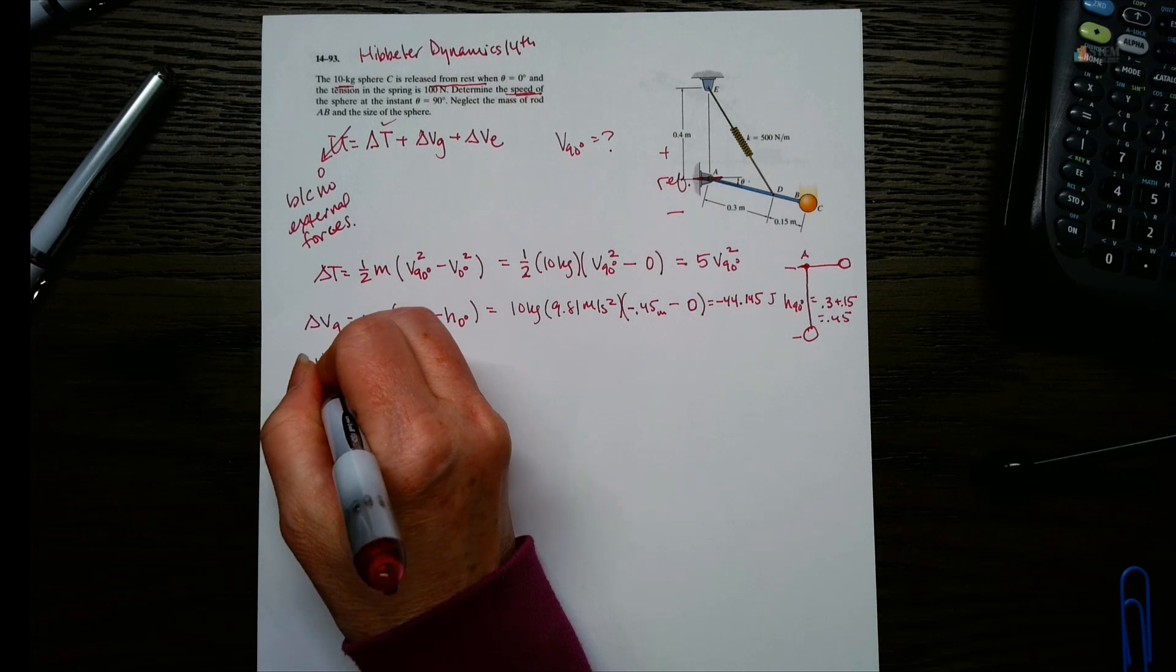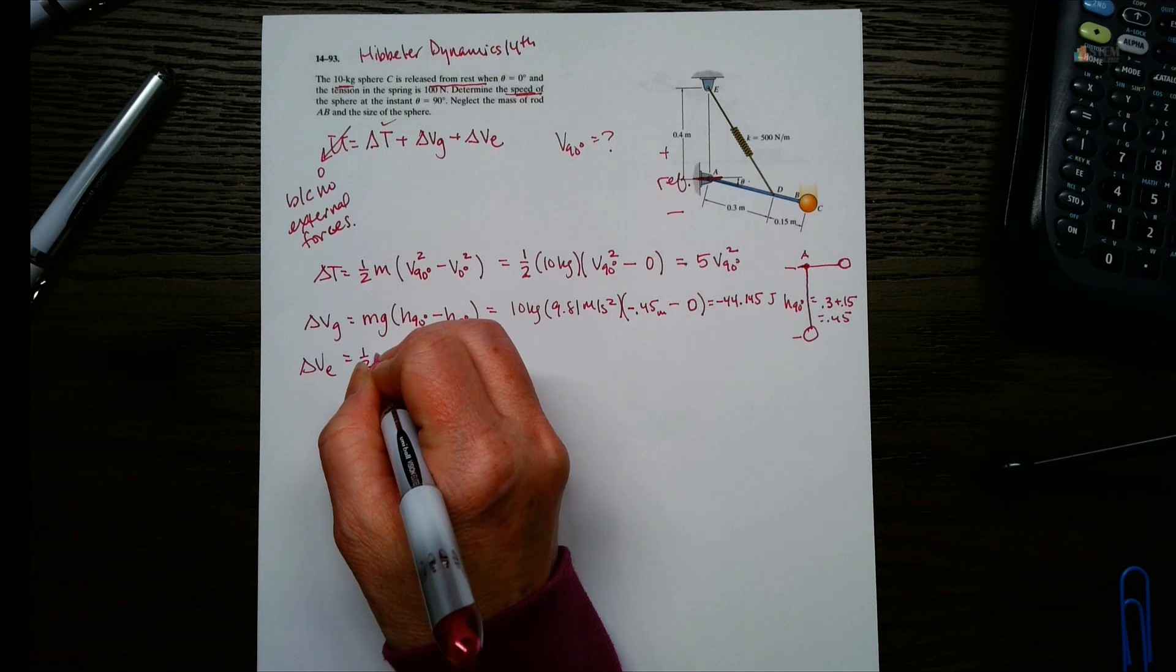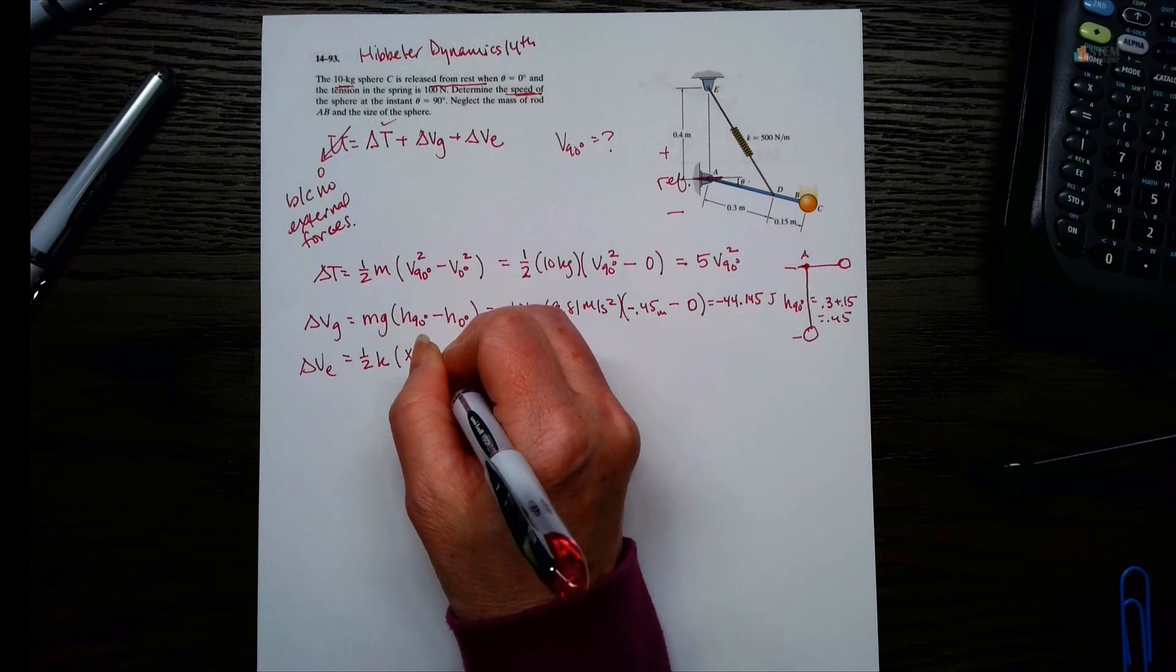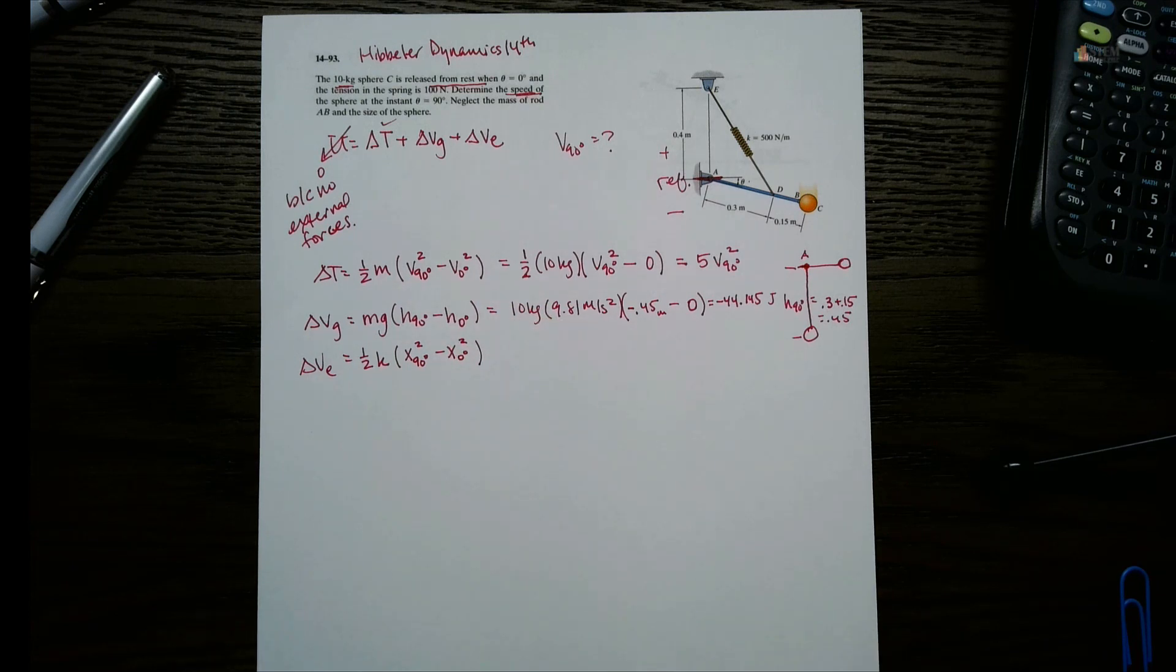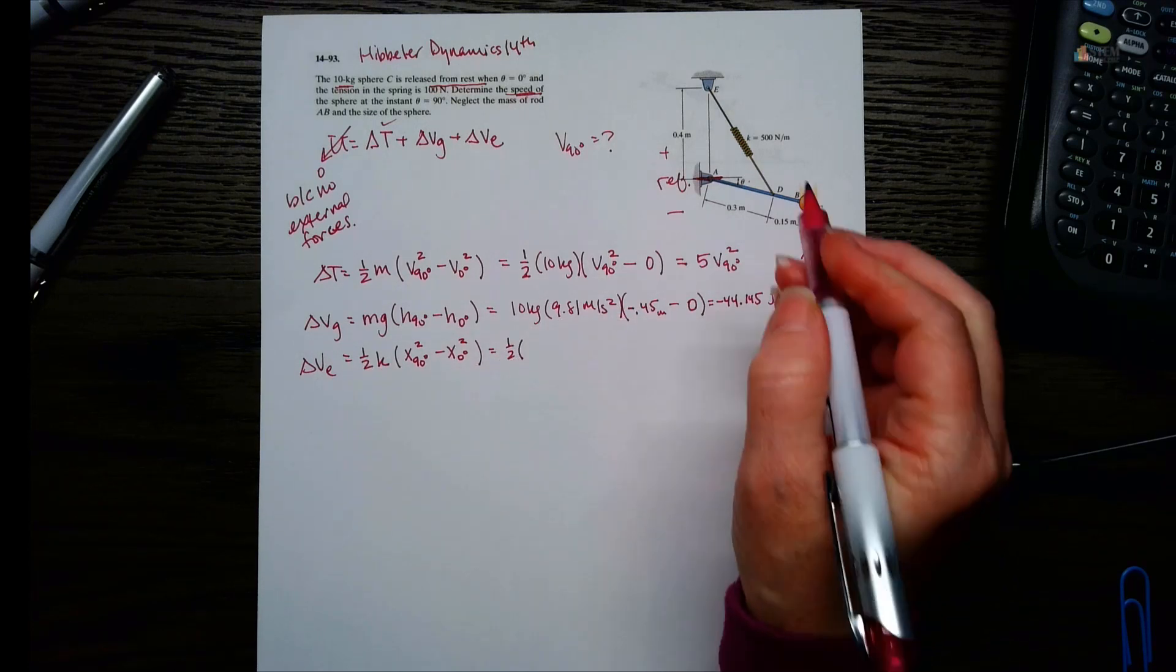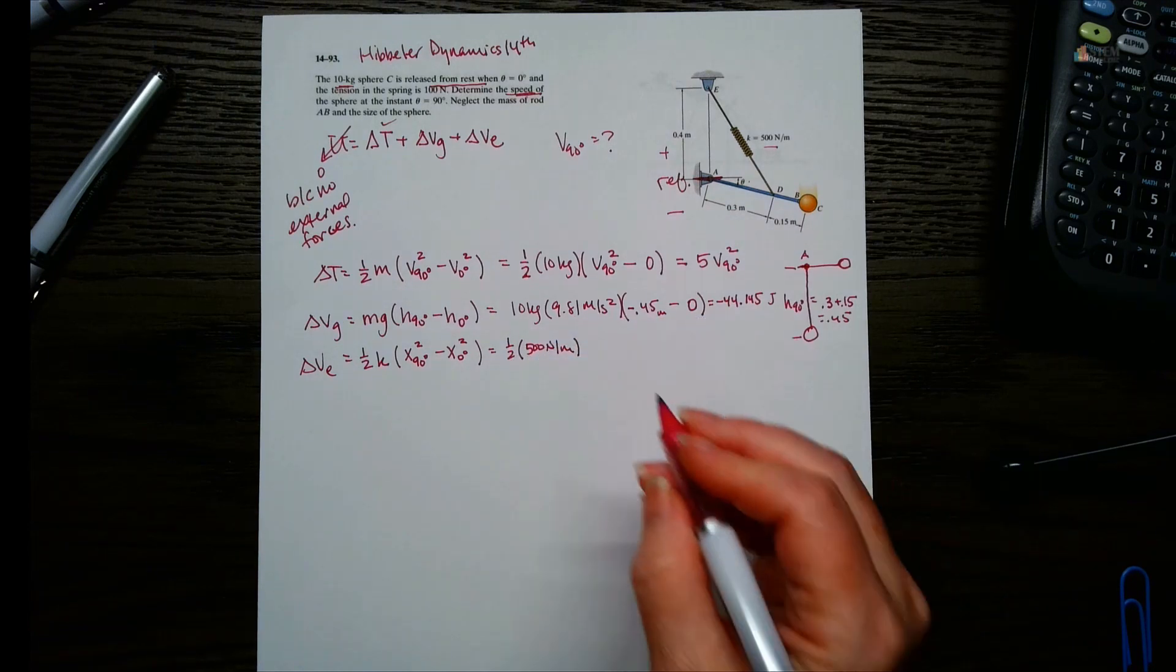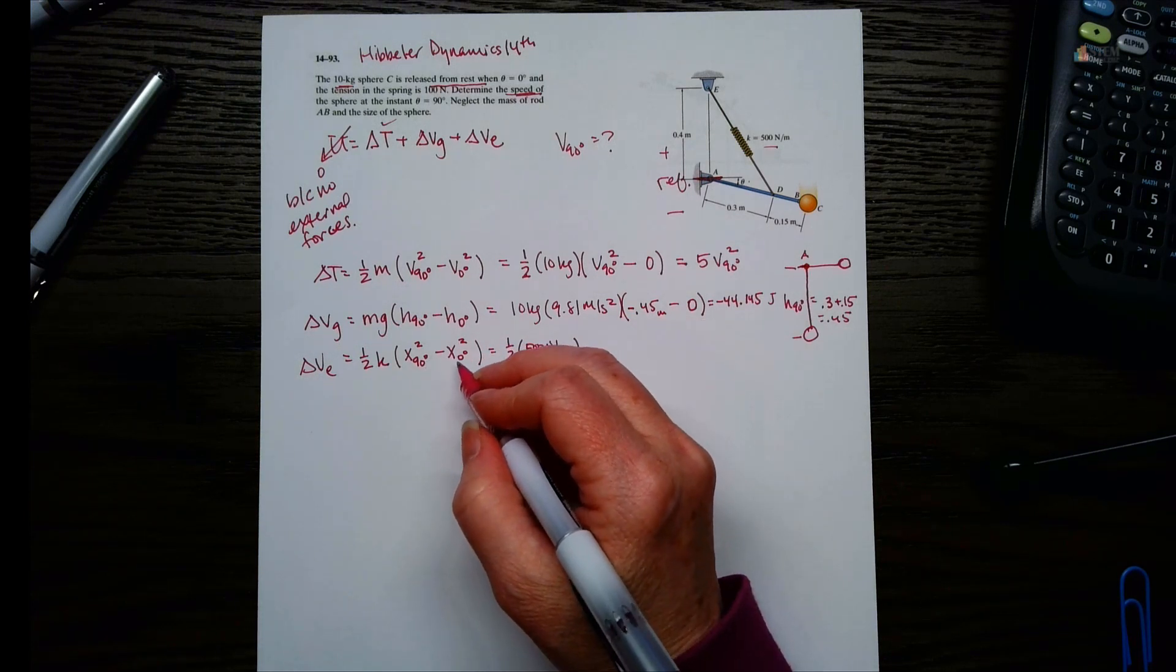And then finally, let's do delta VE. So the equation there will be one half K. We're going to have the X at the final position, so 90 degrees squared minus X at the initial position of 0 degrees squared. Let's plug these in. So one half K is given as 500 newtons per meter. And then I need to find the X90 here and then the X at 0 degrees.